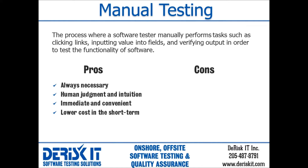A con of manual testing is that it's time-consuming. It takes longer for a tester to manually execute dozens of test cases. A correctly defined and set-up automated tool might perform the same actions in only a matter of minutes. Manual testing can also be inconsistent, as the tester rarely performs the exact same process each time they run a test case.